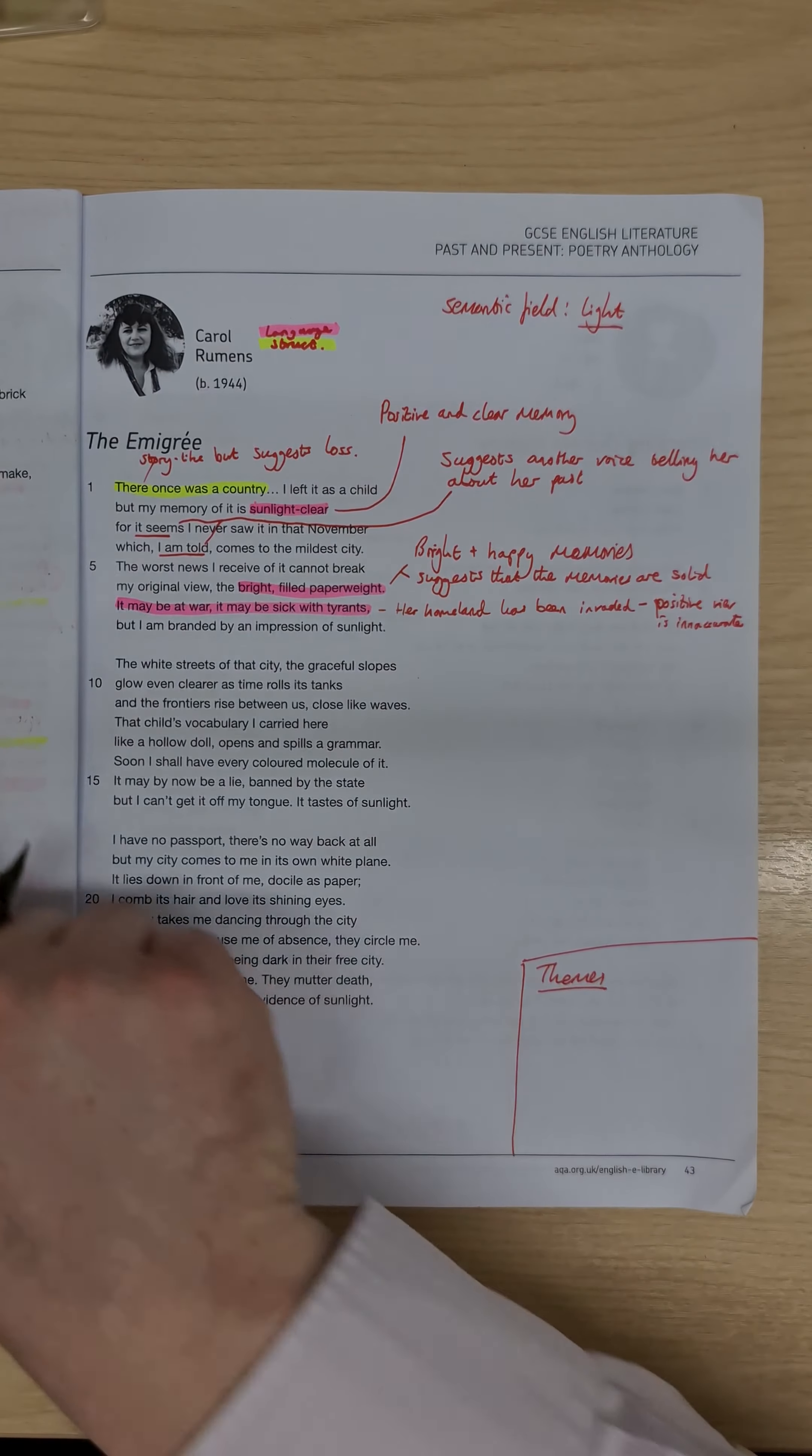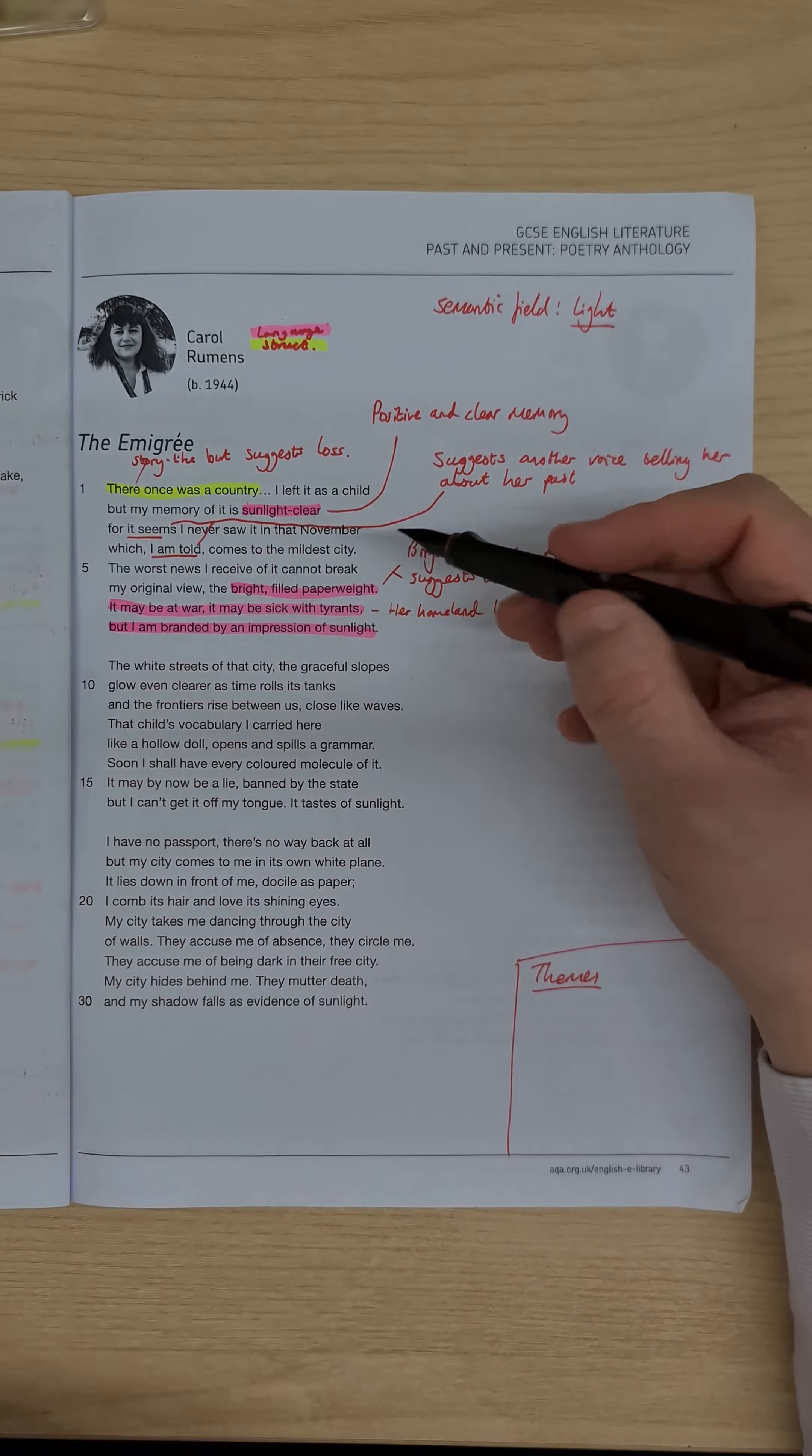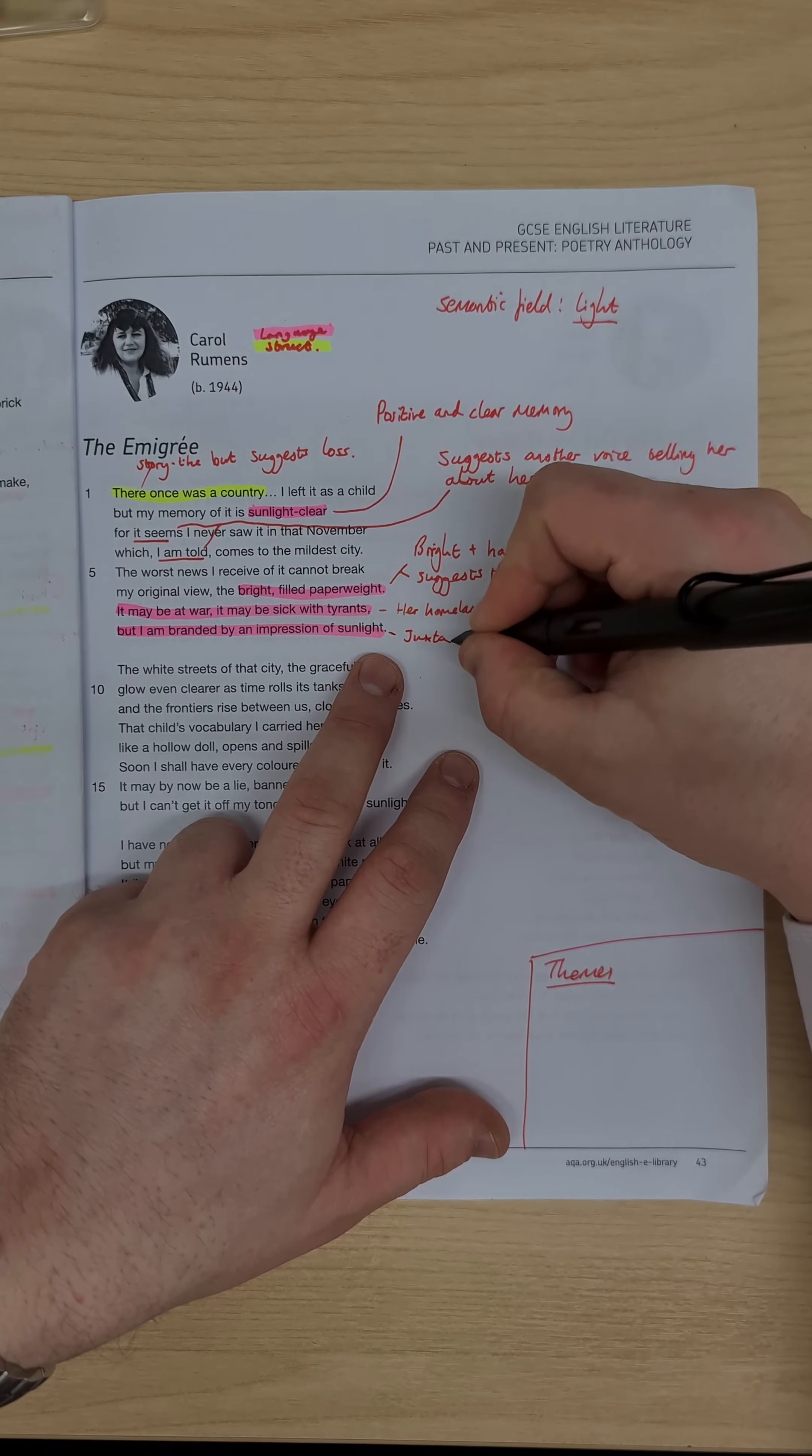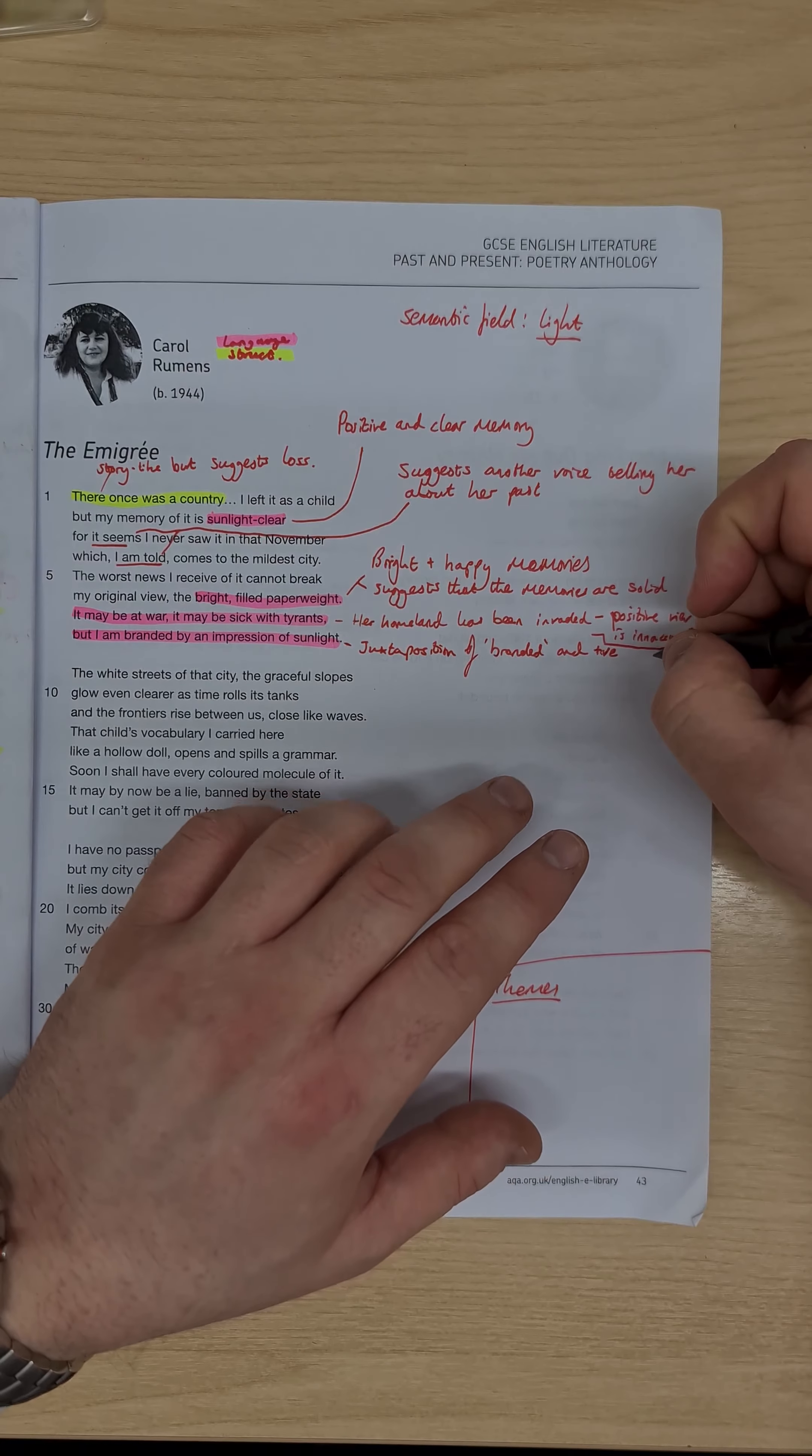Looking at the last line of the stanza and another note to make about the language used here, but this is going back to that light imagery. And it's an interesting sandwich that we've got here at the end where we have the light imagery, the conflict imagery, followed by the light imagery again. But we have this branded. So we have this juxtaposition where the positive impression of sunlight is juxtaposed with branded. It suggests this permanence to a view. So we have a juxtaposition of branded and the positive. So I'm just doing a plus sign followed by a VE to give that positive sign. And if you look at that,